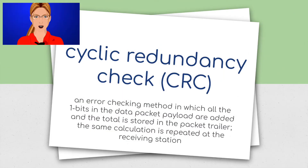Cyclic redundancy check (CRC): an error checking method in which all the 1 bits in the data packet payload are added and the total is stored in the packet trailer. The same calculation is repeated at the receiving station.